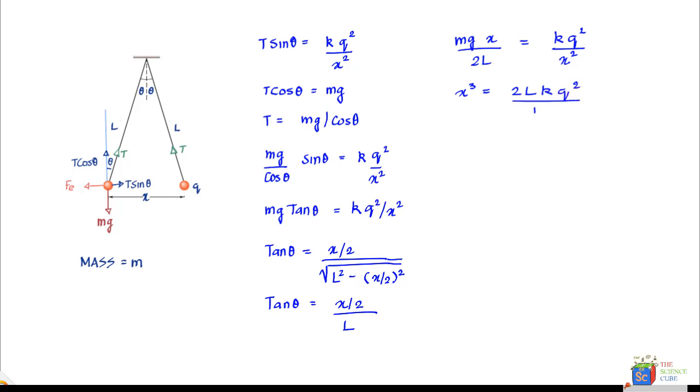If we put k equal to 1 upon 4 pi epsilon naught, then this equals 2 L upon mg q square into k, which is 1 upon 4 pi epsilon naught.